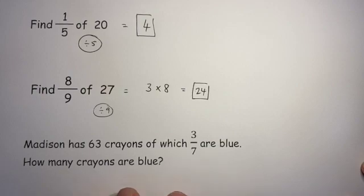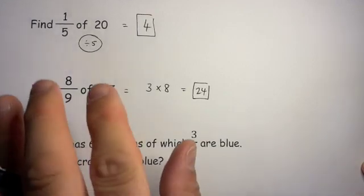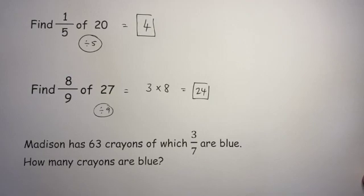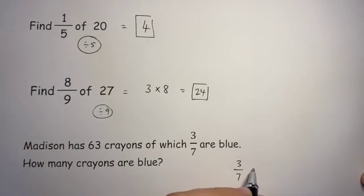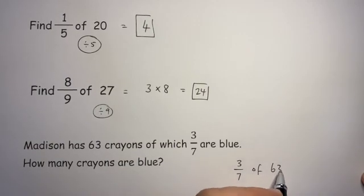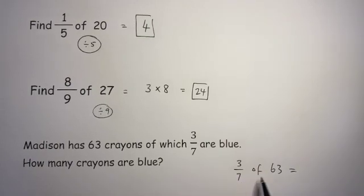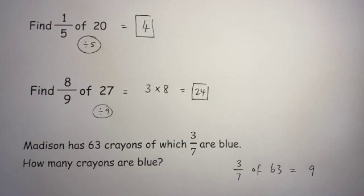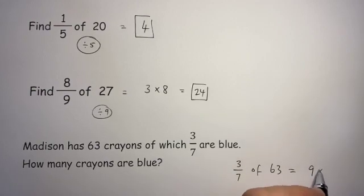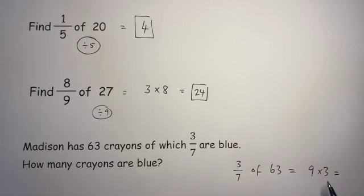The last question is very similar to the previous two — it's just presented in a sentence. We're asked how many crayons are blue, given that 3/7 of the crayons are blue. That means we work out 3/7 of 63. I divide by 7, which gets me 9 — that's what 1/7 is. I don't want 1/7, I want 3 of them, so 3 nines are 27.